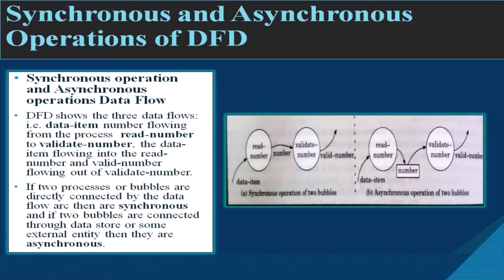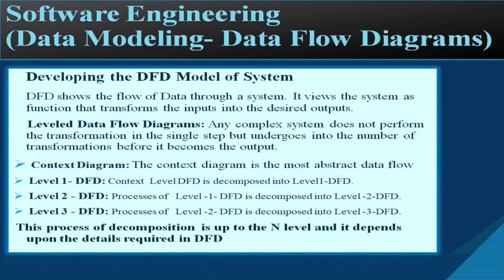In the figure, there are three data flows: data item number flowing from process 'read number' to 'validate number', the data item flowing into 'read number', and the valid number flowing out of 'validate number'.